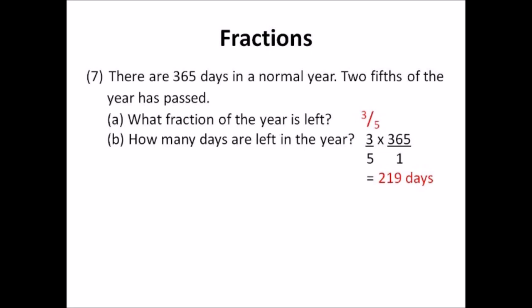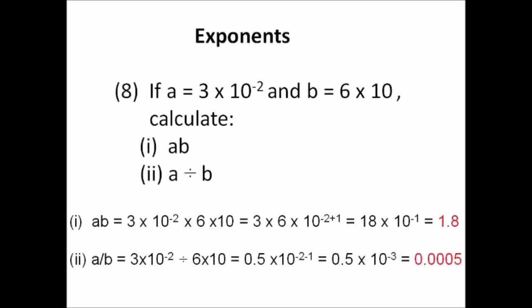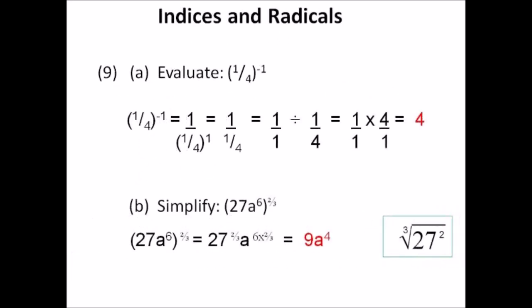Number eight: exponents. Multiply a times b: the answer is 1.8. Divide a by b: the answer is 0.0005. You could just enter the numbers on the calculator and get the same answers. Number nine: indices and radicals. One quarter to the negative one half — flip it to get 4 to the one half, giving 2. For 27a⁶ to the two-thirds: the cube root of 27 is 3, squared gives 9. Multiply 6 by two-thirds to get 4. So the answer is 9a⁴.